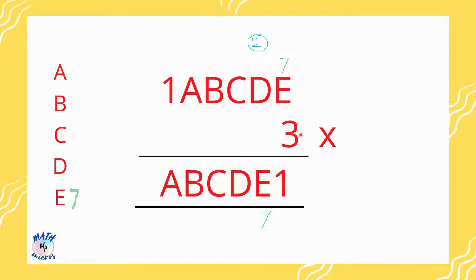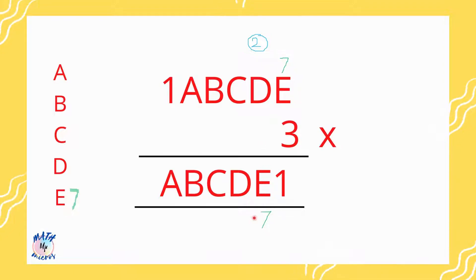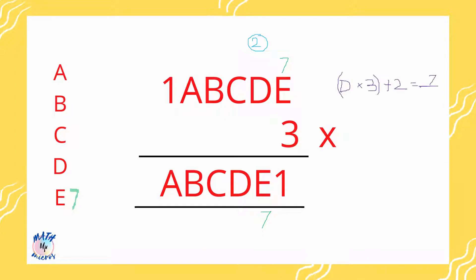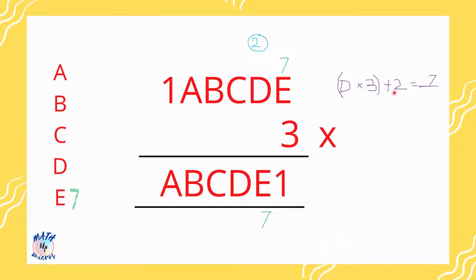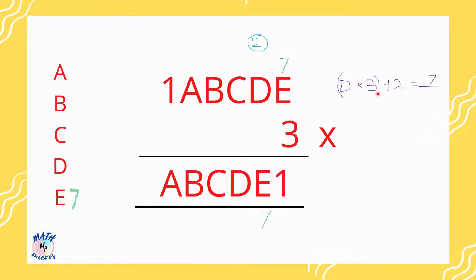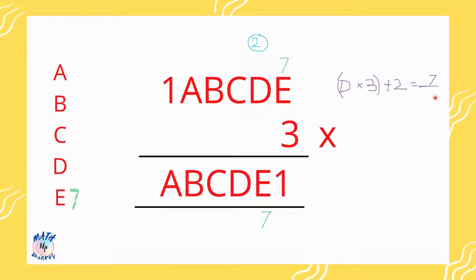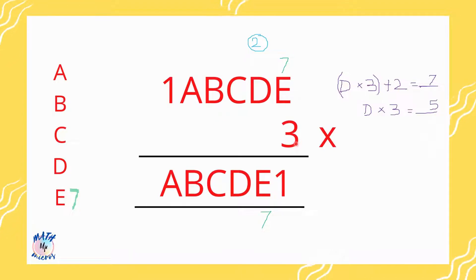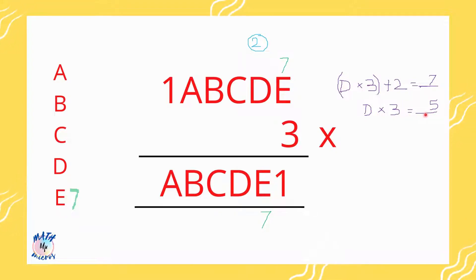We move to the next digit, d. d times 3 with the carried-over 2 added gives a number ending in 7. So d times 3 alone ends in a number with units digit 5, since 7 minus 2 is 5. It is obvious that d is 5, since 5 times 3 gives a number that ends in 5.